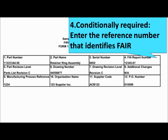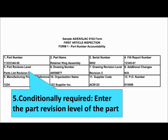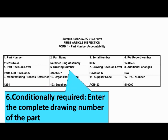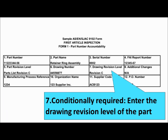Field 5 is conditionally required — please enter the part revision level of the part. Field 6 is conditionally required — please enter the complete drawing number of the part. Field 7 is conditionally required — please enter the drawing revision level of the part.